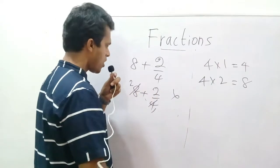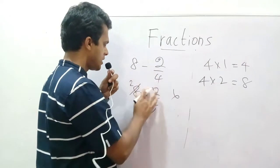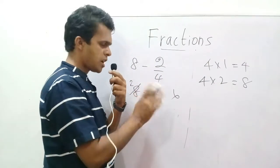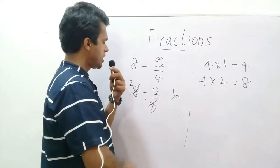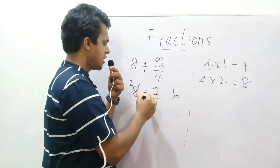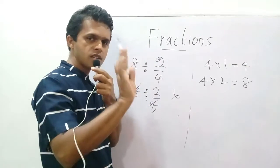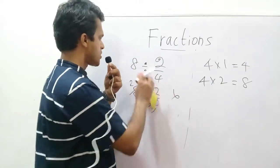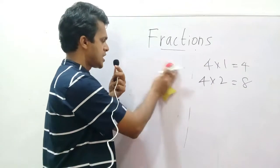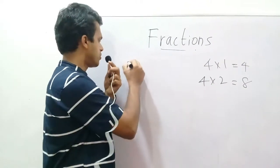You think you are given subtraction. Here, subtraction — can you simplify that? 1 time and 2 times? Cannot. You think you are given division — can you simplify that? 1 time and 2 times? Cannot — wrong. So if you want to simplify, it should be given as multiplication.